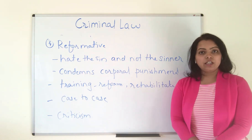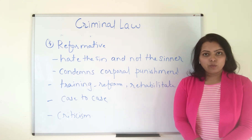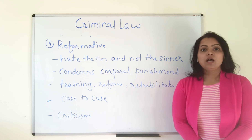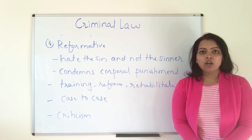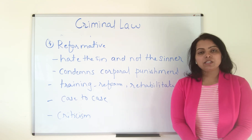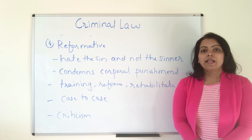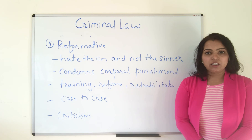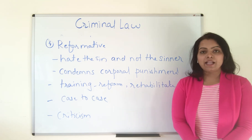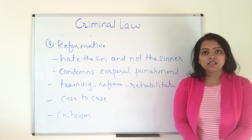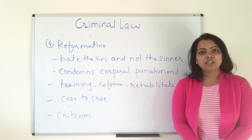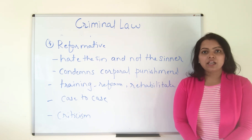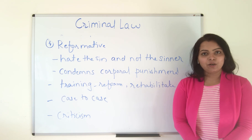So today we learned all the theories of punishment. In your conclusion, write why these theories exist — because administration of justice is a necessity — give the difference between civil law and criminal law, then the purpose of these theories, explain each theory, and conclude that every theory has some limitations. No theory is perfect; all theories are criticized, yet all are still present in many legal systems of the world. Write a good answer in your answer sheet and stay tuned for the next lecture. Goodbye and good luck.